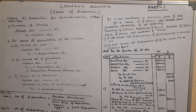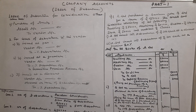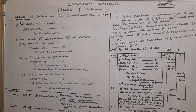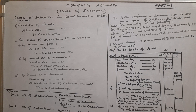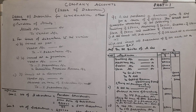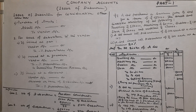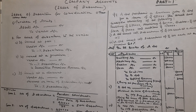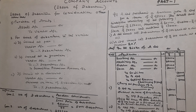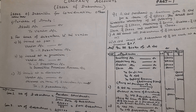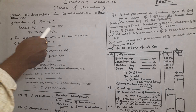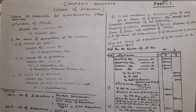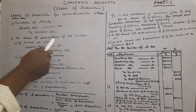Hello students, welcome to KT's Commerce Classes. Today's topic is Company Accounts - Issue of Debentures, Part One: Issue of Debenture for Consideration Other Than Cash. Number one: Purchase of assets — Assets Account debit, to Vendor Account.